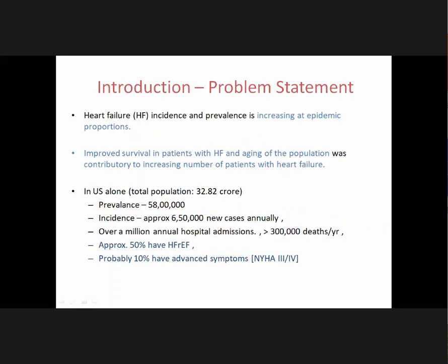For the introduction and problem statement: heart failure — the incidence and prevalence is increasing at an epidemic proportion in the last one decade. This epidemic is primarily due to improved survival in patients with heart failure and the progressive aging of the population. What are the two important causes of heart failure after the age of 60?